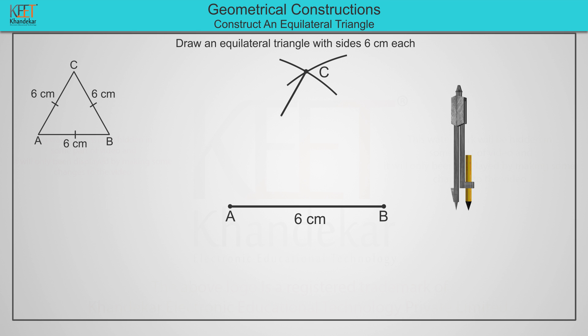Join point C and point A. Also join point C and point B. Thus, triangle ABC on the screen is the equilateral triangle.